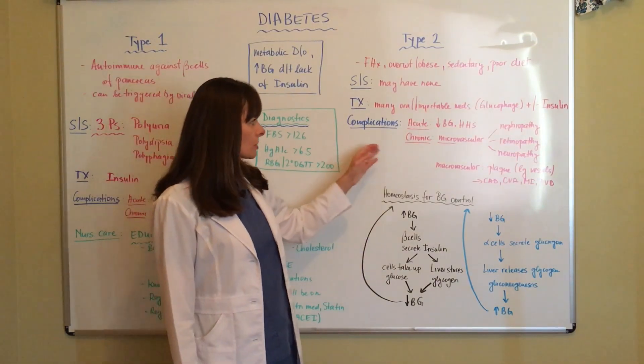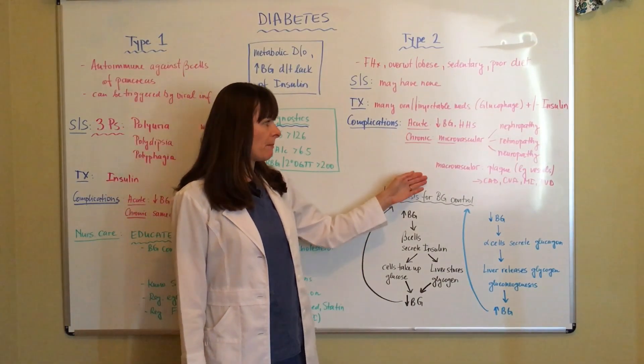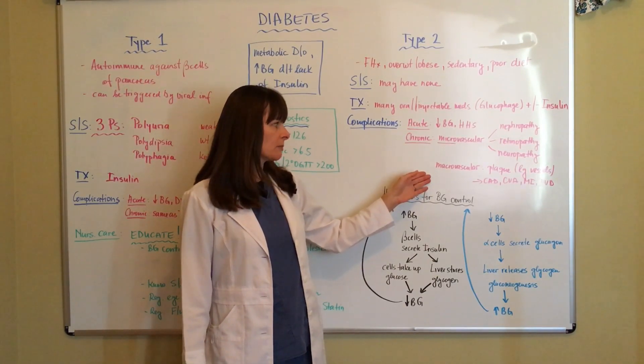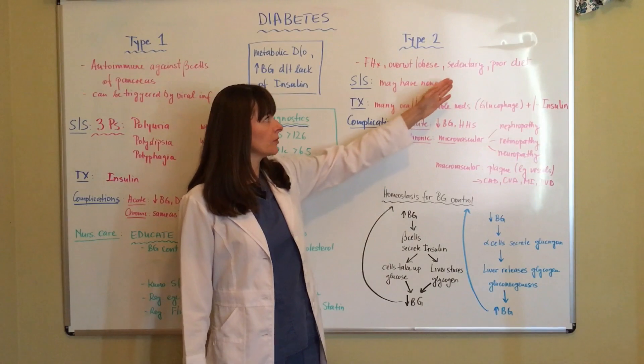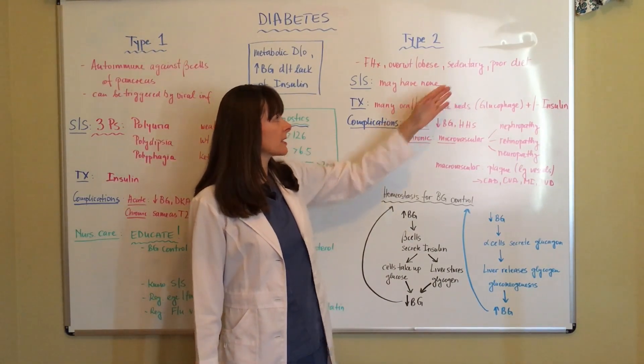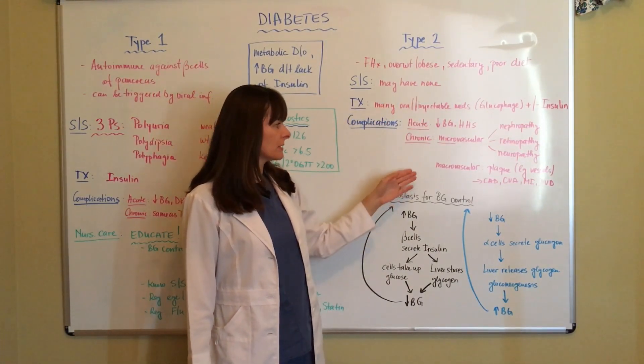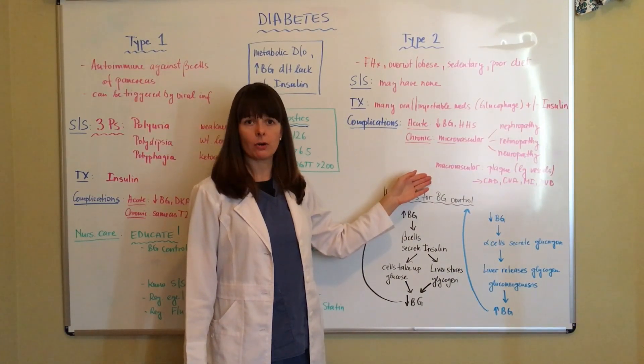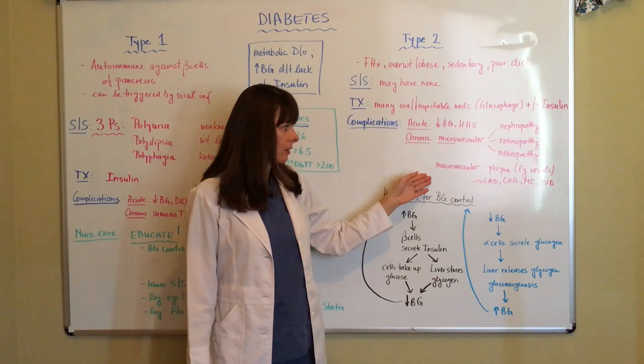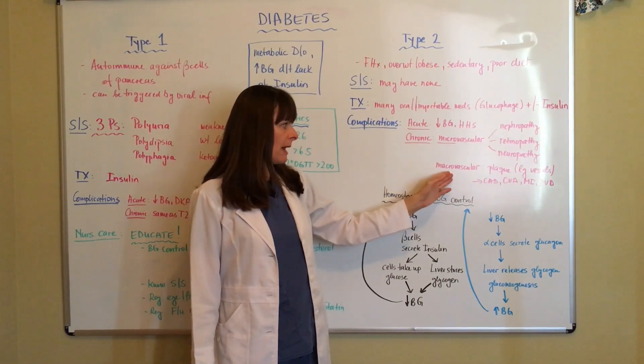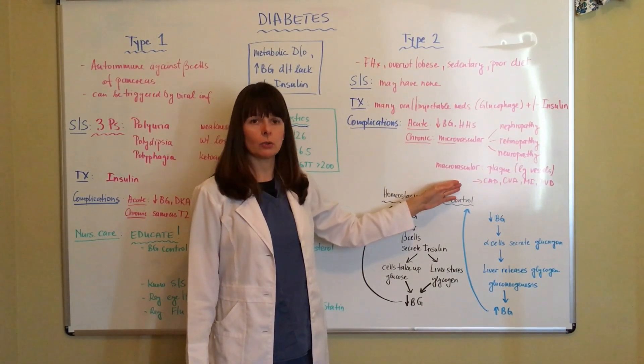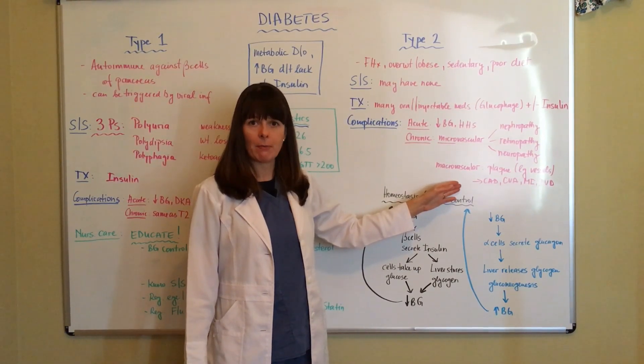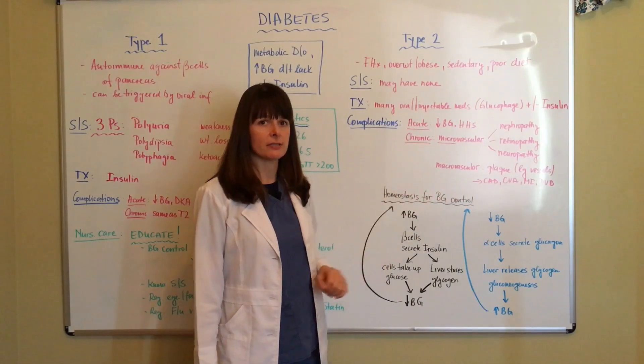Complications chronically also happen on a macrovascular level, so that's more of the large blood vessels. That is because of this whole poor diet, sedentary lifestyle, overweight, obesity, plaque builds up. Those patients are at high risk for increased cholesterol as well. Therefore, those macrovascular complications include coronary artery disease, CVA stroke, MI heart attack, and peripheral vascular disease.